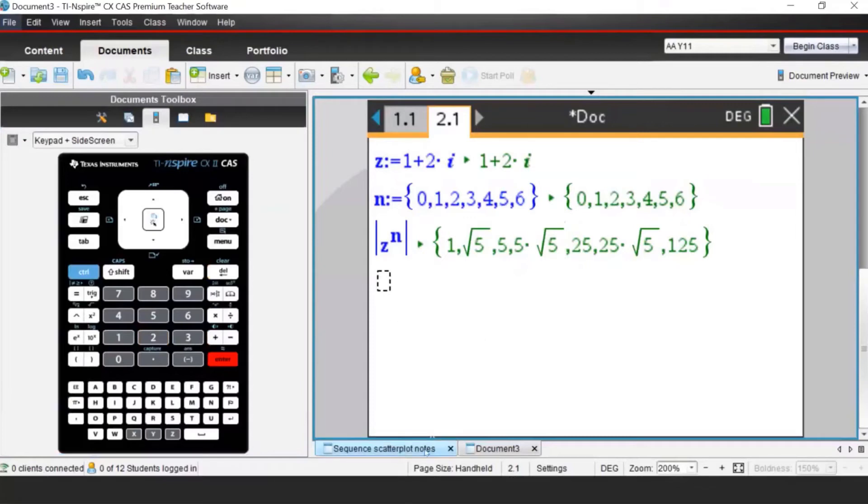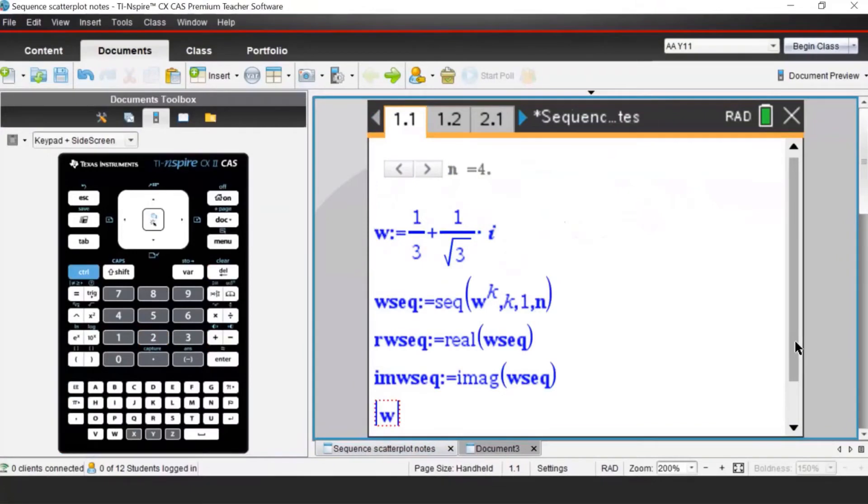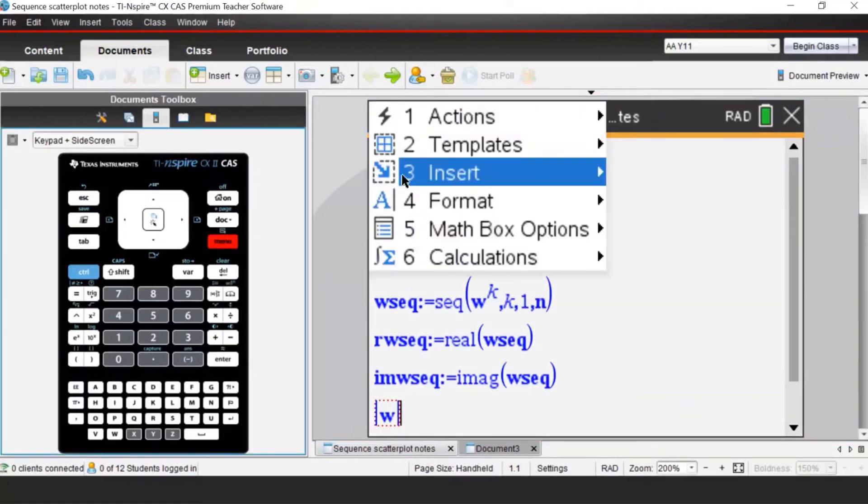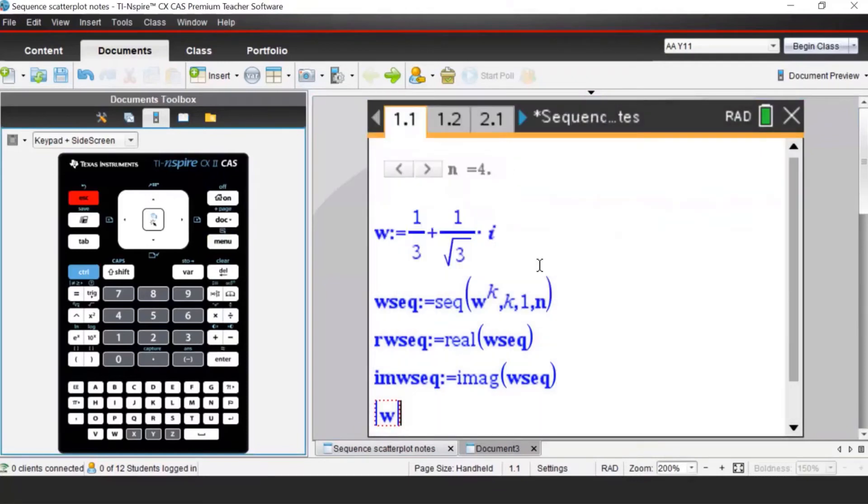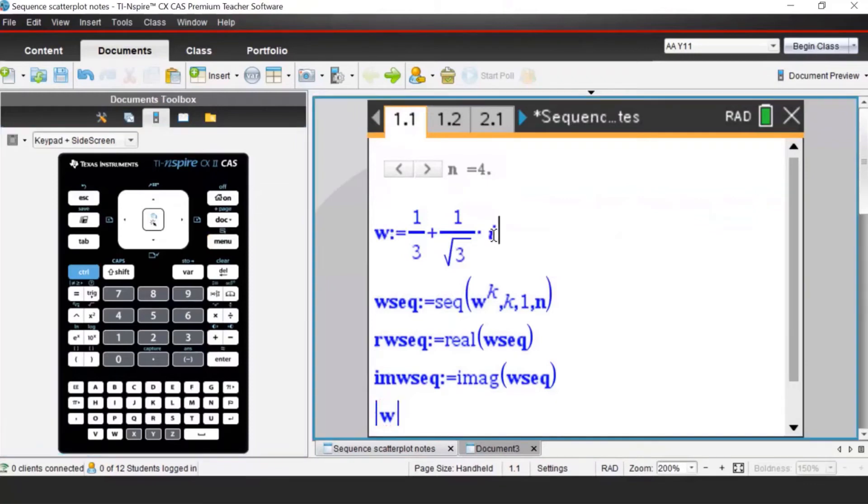One more thing using notes pages is drawing a spiral on the argand diagram. In the notes page, you can insert a slider. It's already done, and I defined number 1, and I defined number W here.